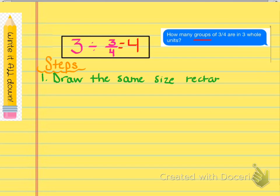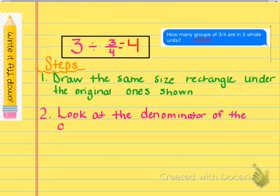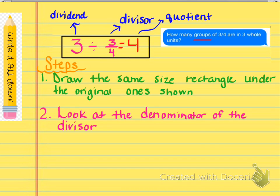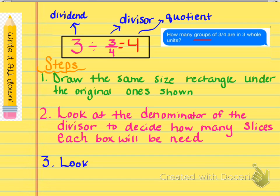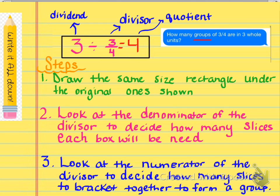Now I want you to write down the steps so you can refer back to them. Step one: draw the same size rectangle under the original ones shown — those were our red boxes. Step two: look at the denominator of the divisor to decide how many slices to cut each box into. That's our divisor, that's our dividend, and that's our quotient. The last step: look at the numerator of the divisor — that was the 3 — to decide how many slices to bracket together to form a group. That's what we needed to do to use models to divide whole numbers by fractions.